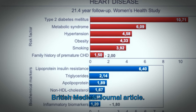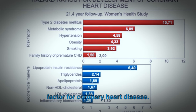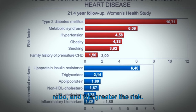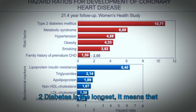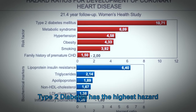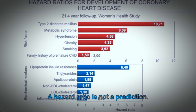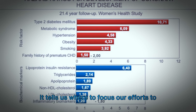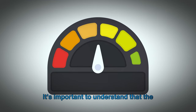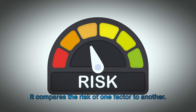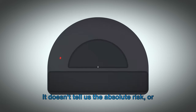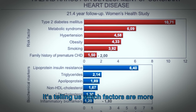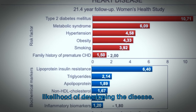Let's go back to the graph from the British Medical Journal article. Each bar in the graph represents a risk factor for coronary heart disease, and the length of the bar corresponds to the hazard ratio of that factor. For example, if the bar representing type 2 diabetes is the longest, it means that type 2 diabetes has the highest hazard ratio and is the most likely to cause coronary heart disease. A hazard ratio is not a prediction — it doesn't tell us that someone will definitely develop a condition. It's a measure of risk, not certainty, and it's a relative measure comparing the risk of one factor to another.